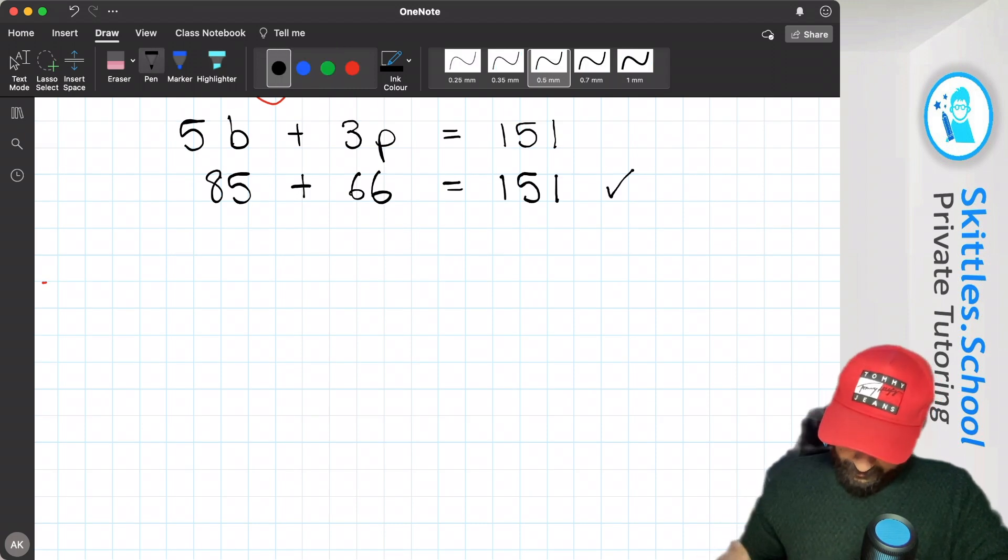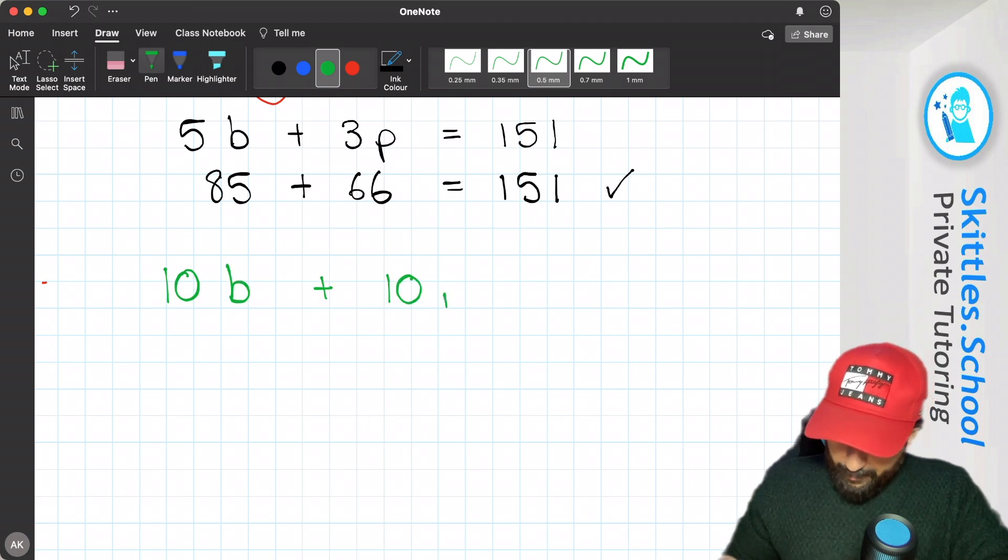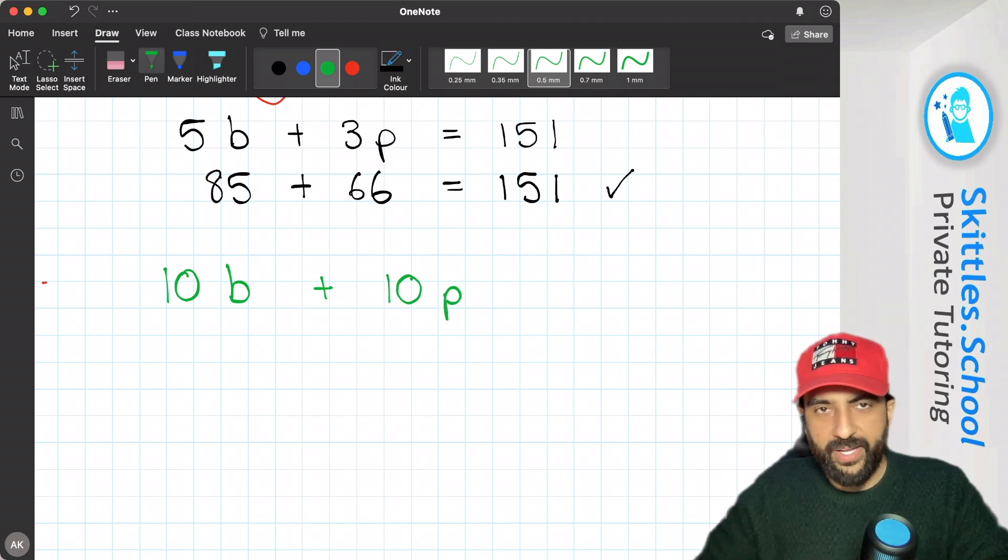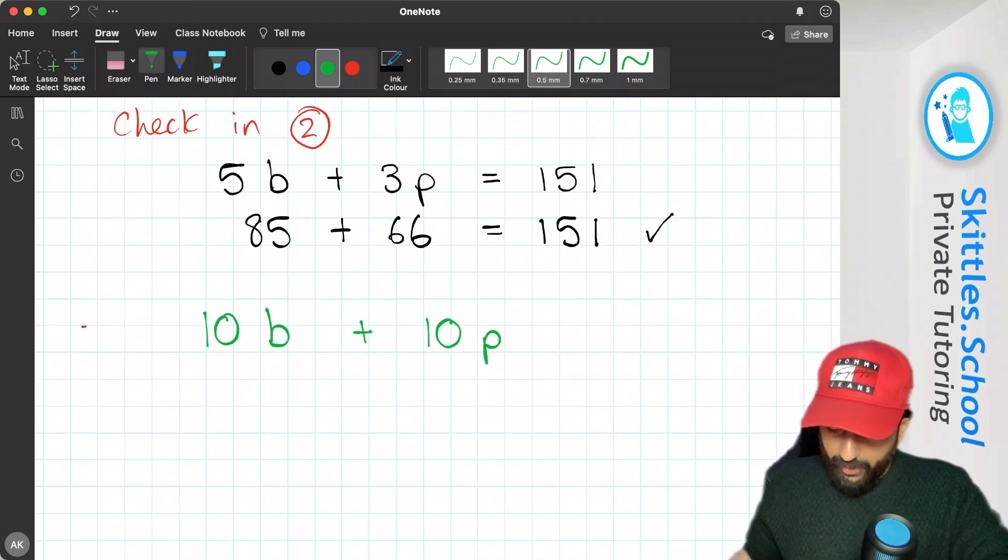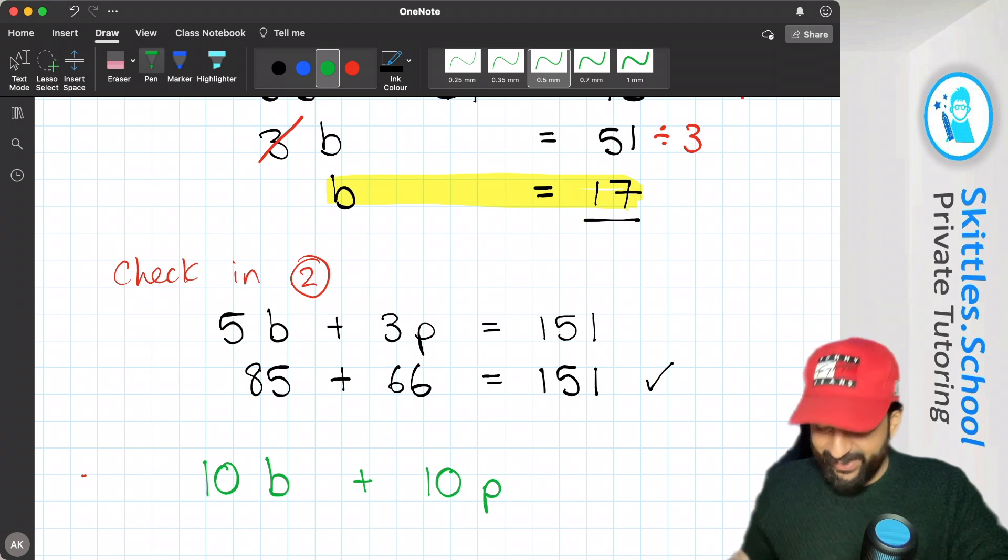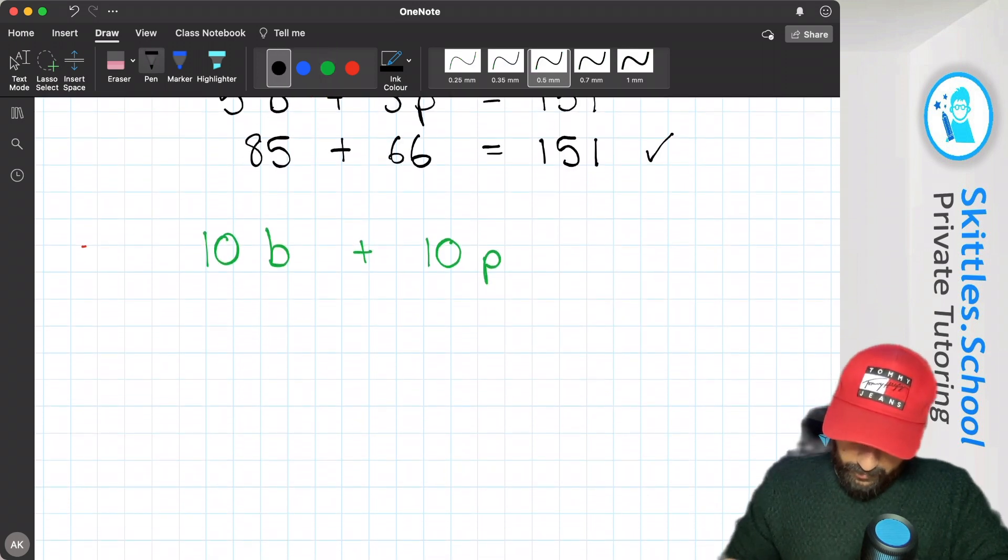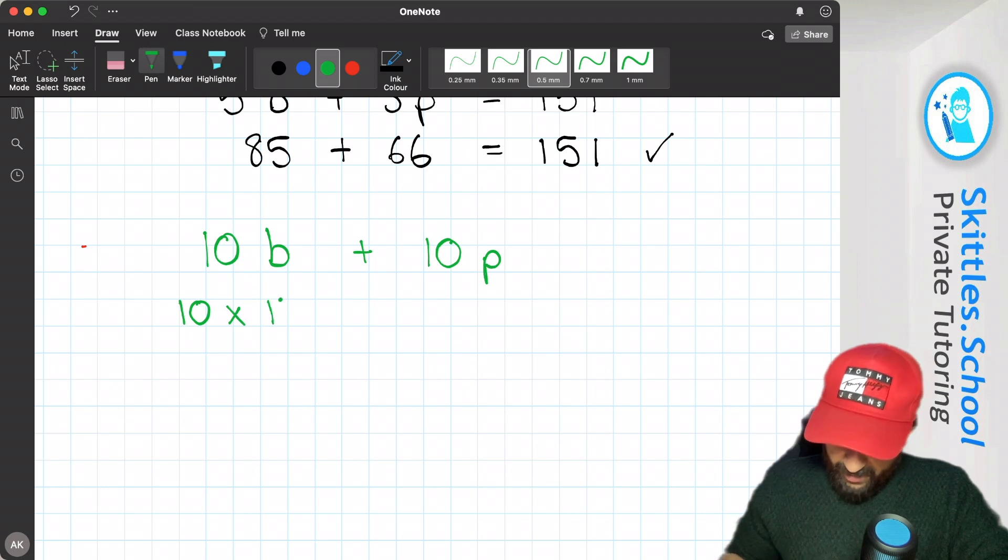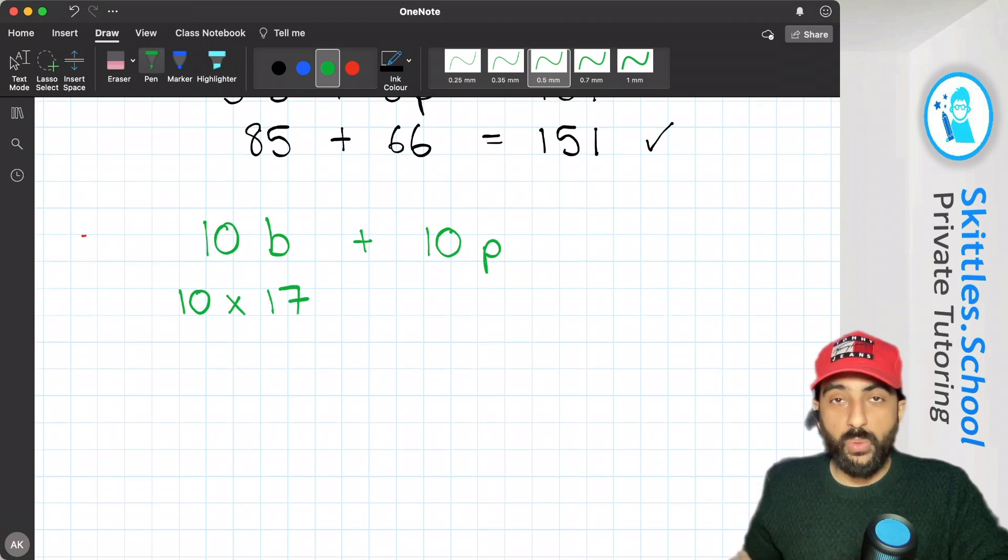So let's answer that. So 10 bananas and 10 pears. That's what we need to work out. Let's make a start. We know what a banana is. A banana is 17. So 10 times 17, which we know is 170.